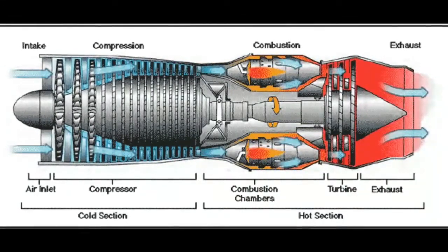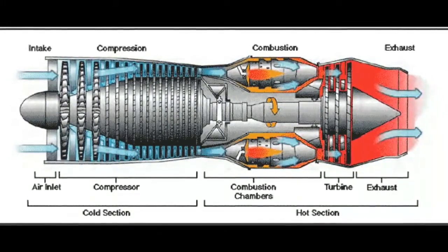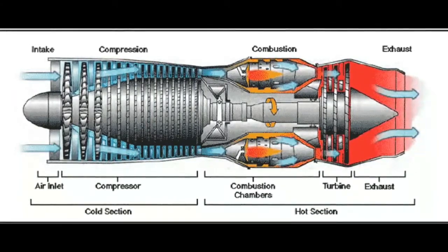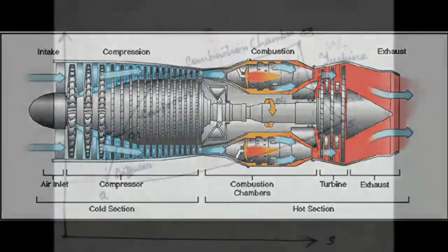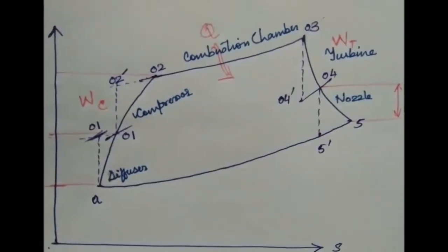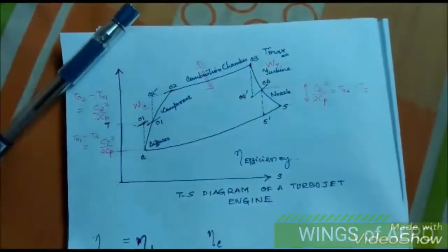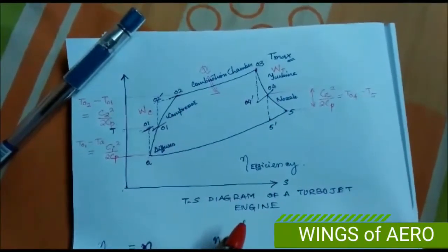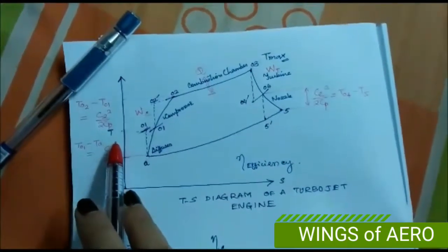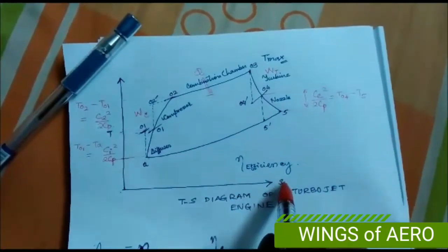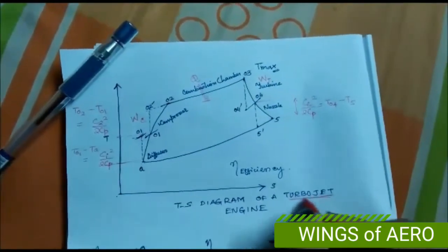At the exit of the combustion chamber, we have the highest peak temperature. In the case of the compressor, the pressure is at its highest peak compared to the other components. This is our T-S diagram of a turbojet engine, where T stands for temperature and S stands for entropy.